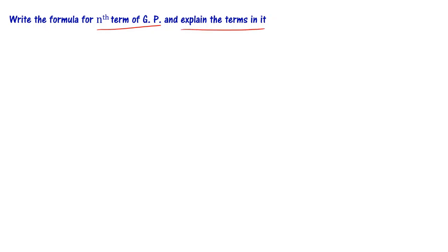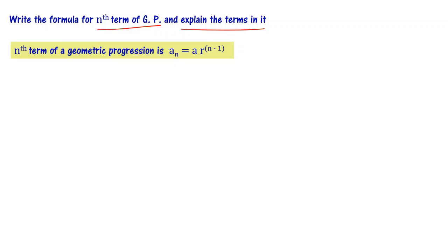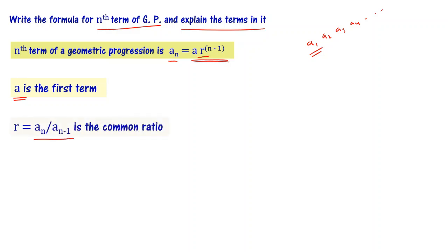Write the formula for the nth term of a geometric progression and explain the terms in it. The nth term of a geometric progression is aₙ equal to a times r to the power (n minus 1). Here, a is the first term, and r is the common ratio, defined as aₙ divided by aₙ₋₁. So r equals a₂/a₁ equals a₃/a₂ equals a₄/a₃ and so on.